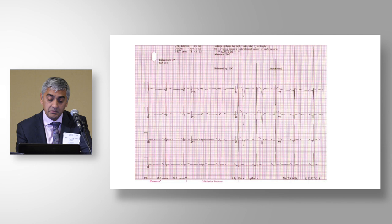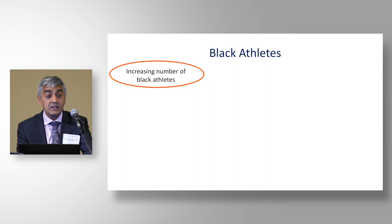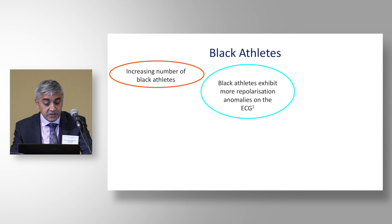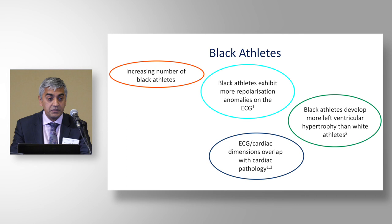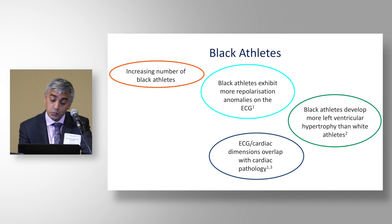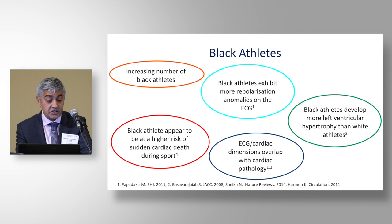Black athletes are an increasing number of athletes worldwide, making up 70% of the NBA and around 80% of the NFL, and 33% of the British Premier League. They exhibit a higher prevalence of repolarization anomalies compared to white individuals and more left ventricular hypertrophy overlapping with hypertrophic cardiomyopathy. Worryingly, sudden cardiac death is four to five times greater in black athletes compared to white athletes.